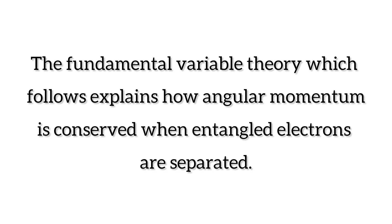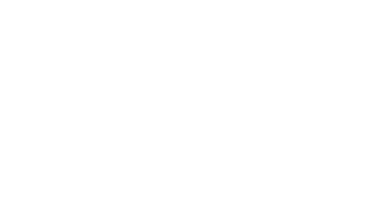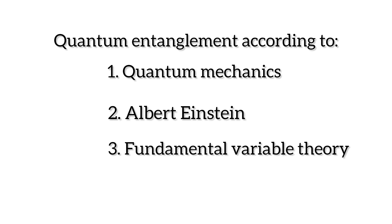In this segment, I'll explain quantum entanglement according to the view of quantum mechanics, according to the view of Albert Einstein, and according to my view, which I refer to as the fundamental variable theory. Lastly, I will talk about Bell's theory and the method used by three scientists to back up the theory.